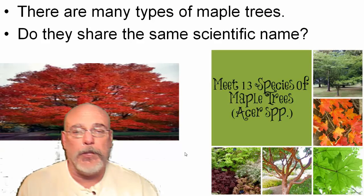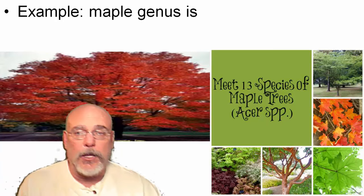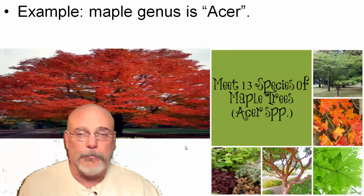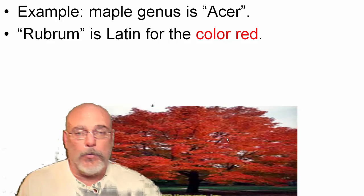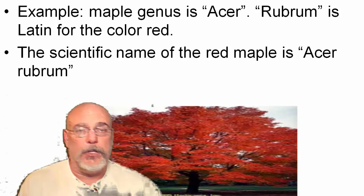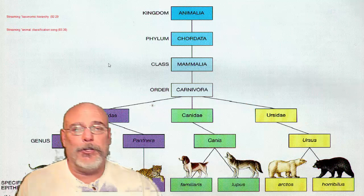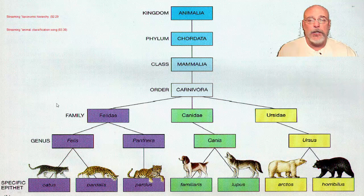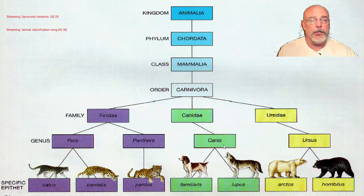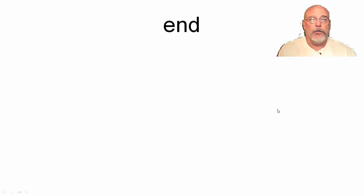Looking at a classification chart, you can see kingdom, phylum, class, order, family, genus, and species. The Latin word for cat is 'felix' — that's where the word 'feline' comes from. Your house cats are in the genus Felix. 'Canis' means dog — the house dog is Canis familiaris, your familiar dog. And 'ursus' is the Latin word for bear, as we've already discussed. That's all for this lecture!